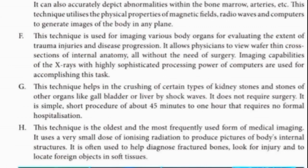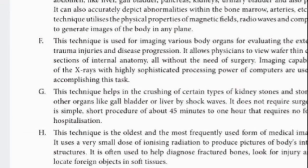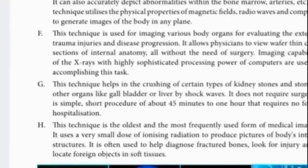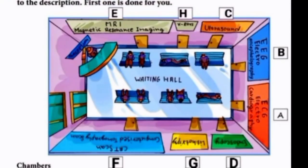The last technique is the oldest and most frequently used form of medical imaging. It uses a very small dose of ionizing radiation to produce pictures of the body's internal structures. It is often used to diagnose fractured bones, look for injuries, and locate foreign objects in soft tissues — foreign bacteria, pathogens or disease-causing microorganisms. This technique is X-ray.